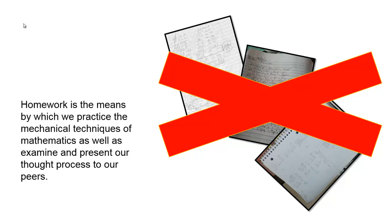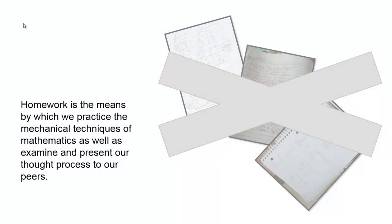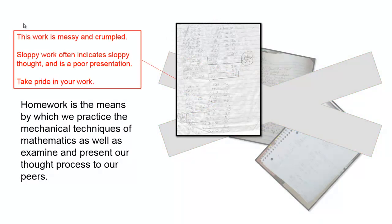So what were some of the ways that my three examples up on the board fail this idea? Well, let's take a look at them briefly. The first example, well, this work is messy, crumpled. Sloppy work often indicates sloppy thought, and it's a poor presentation of your work. Take pride in the work that you're going to do. This sort of violates our presentation of the thought process idea.